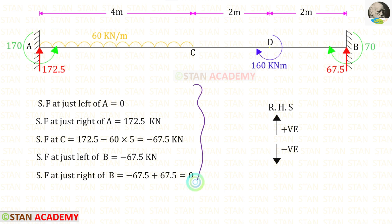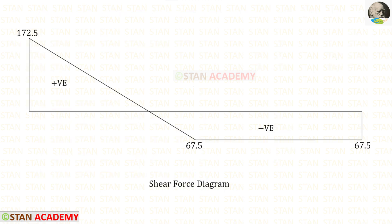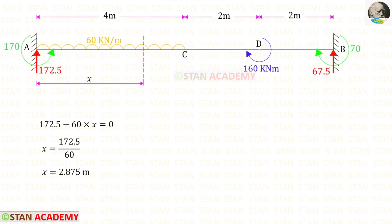Here you can see the shear force calculations and the shear force diagram. At one point, the shear force becomes zero. Under the uniformly distributed load, at this point there will be a maximum positive bending moment. Let us make a section at a distance of x from point A. We know that at this section the shear force is zero, and using that concept we can find x.